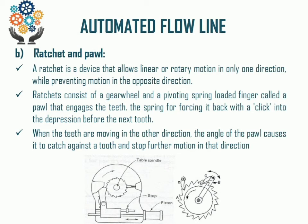The ratchet consists of a gear wheel where an appropriately spring-loaded pawl engages the teeth, with the spring forcing it back with a click into the depression before the next tooth. When the teeth move in the other direction, the angle of the pawl causes it to catch again, stopping further motion in that particular direction. The single-direction motion ratchet and pawl mechanism is the most effective mechanism for rotary type Automated Flow Line.